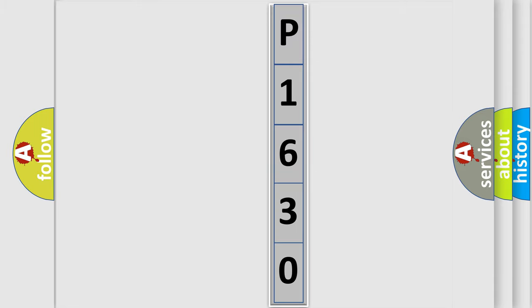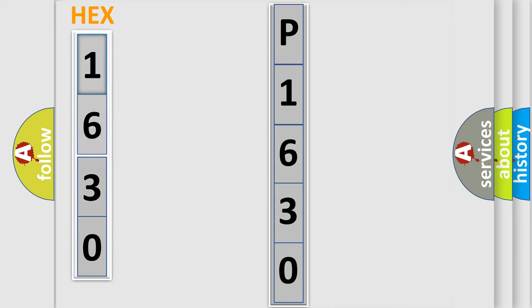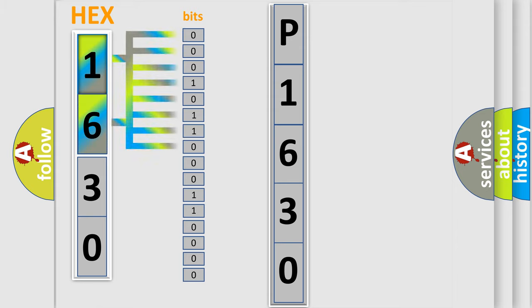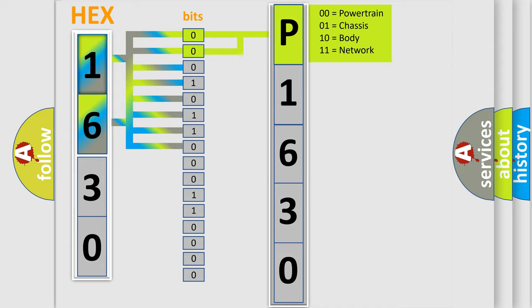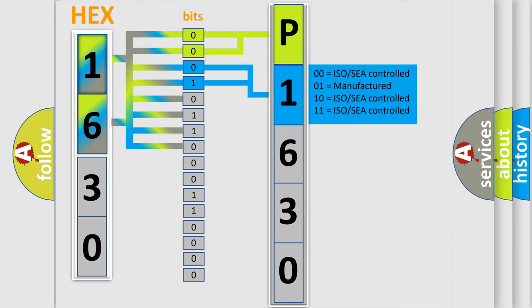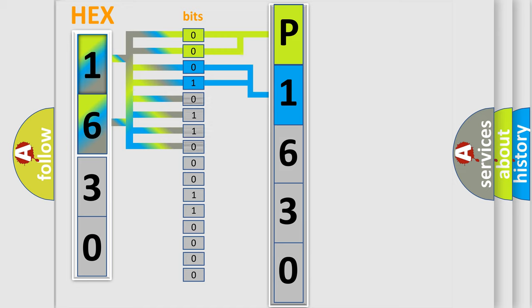The error code is split into two bytes consisting of 16 bits. One bit is the basic unit that each computer works with. The bit has two logical states: zero (low level) and one (high level). By combining the first two bits, the basic character of the error code is expressed. The next two bits determine the second character. The last bits of the first byte define the third character of the code.